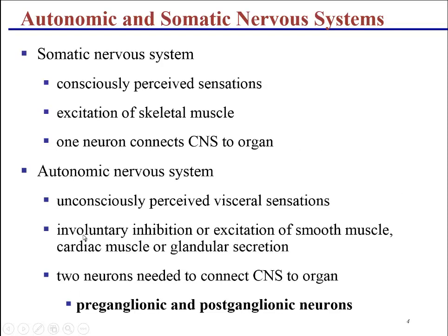Compared to the somatic side, which monitors and activates skeletal muscle, allows us to be aware of perceived sensations, and only uses one neuron, the autonomic side picks up subconscious or unconscious perception of visceral sensations. It will stimulate or inhibit smooth muscle, stimulate or inhibit cardiac muscle, and stimulate or inhibit the release of secretions from various glands.